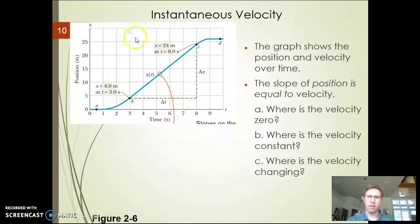What does this look like graphically? Here's a position versus time graph. I want you to take a minute, pause the video once again, and I want you to tell me where on this graph is the velocity going to be 0? Where on this graph is the velocity going to be constant? And where on this graph is the velocity going to be changing? I want you to pause and write down your answer to A, B, and C. Pause and try it out.